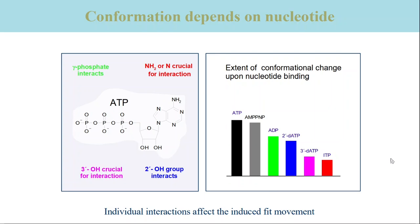This slide shows the extent of conformational change induced by the different ATP derivatives. The extent of conformational change was simply measured by the size of the signals in the difference spectra. The smallest change is seen for modifications at the 3-prime hydroxyl group and the region close to the amino function of ATP. Thus, interaction between these groups and the ATPase are crucial for the conformational change. A control with AMPPNP showed that this compound gave a very similar spectrum and a very similar extent of conformational change.